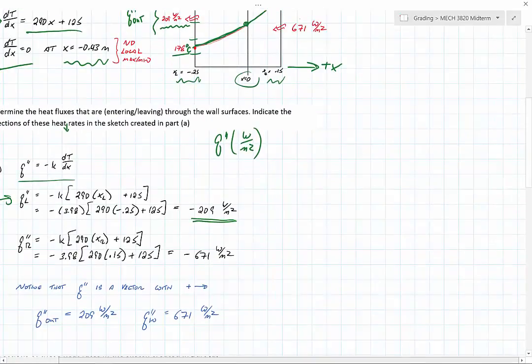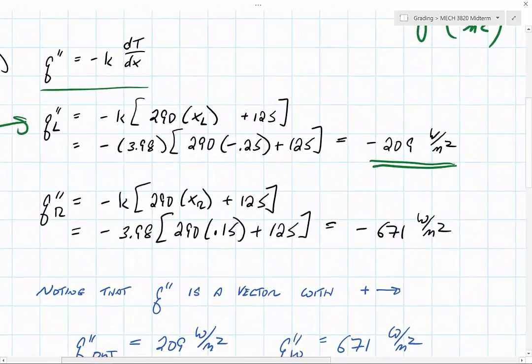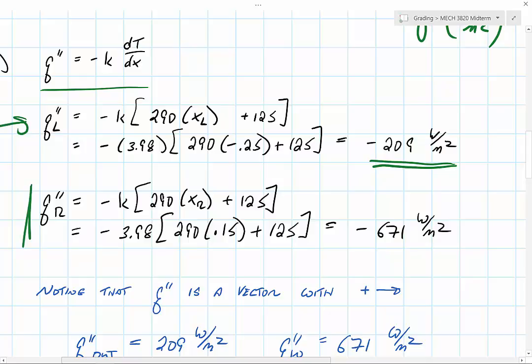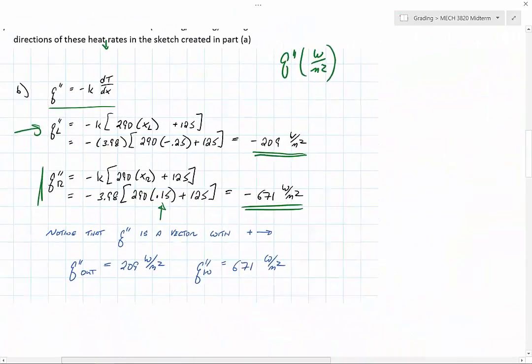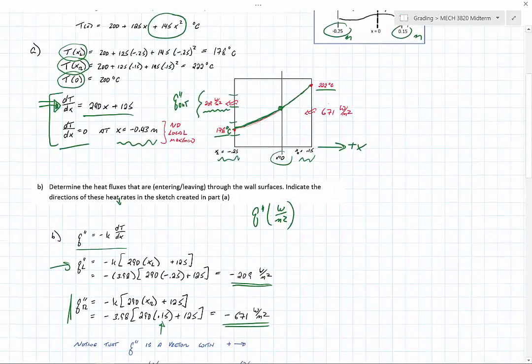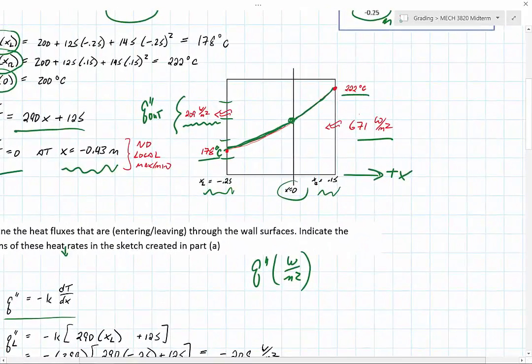Then we look at the right hand side, where our value is 0.15, and again we end up with a value that's negative. We go up and take a look at our coordinate system. In this case, negative is still pointing to the left, but we have a q flux that's in. We have 671 watts per square meter coming into the wall and 209 watts per square meter leaving the wall.